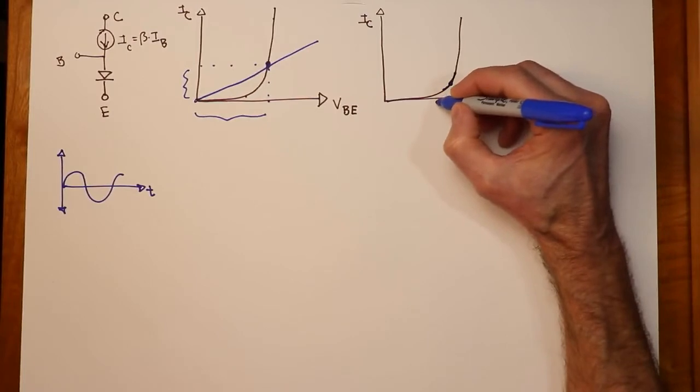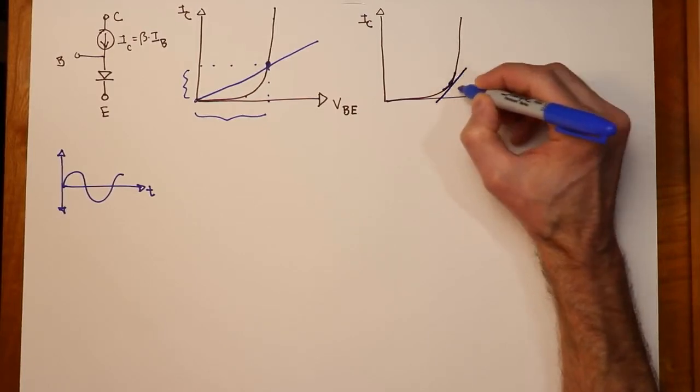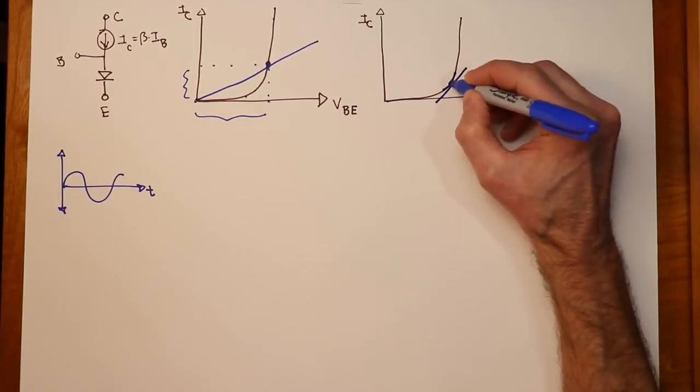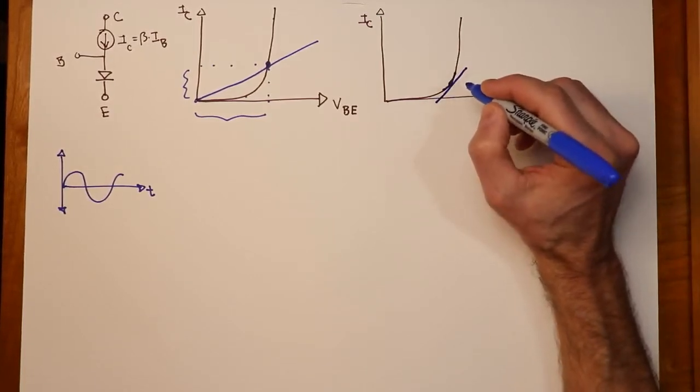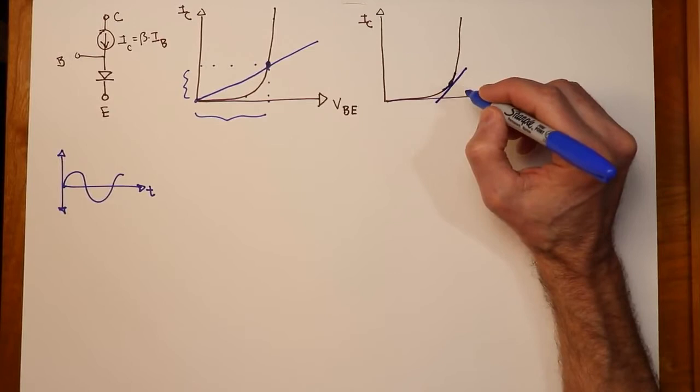In other words, the Q point in the circuit. So you could imagine a line like this, which is tangent to this operating point. The slope of this line is what the AC resistance of that diode looks like.